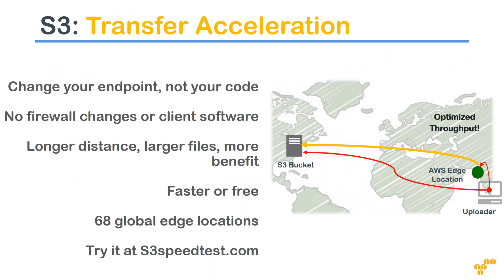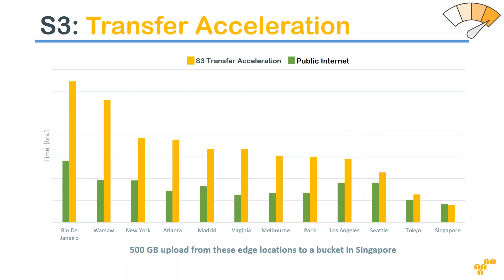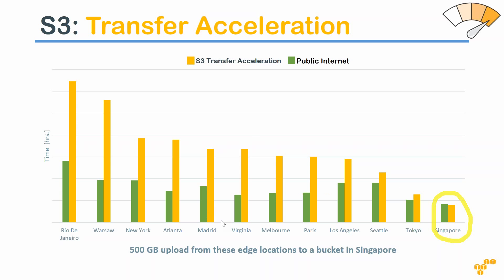While the transfer acceleration test runs in the background, let us look at a chart showing the internal optimized bandwidth throughput path. This chart compares public internet transfer versus S3 transfer acceleration rate — the yellow bars versus the green bars. This test was done uploading 500 GB to a bucket in the Singapore region. When uploading from Singapore to Singapore, the difference is very minimal, especially on a corporate network with high bandwidth.